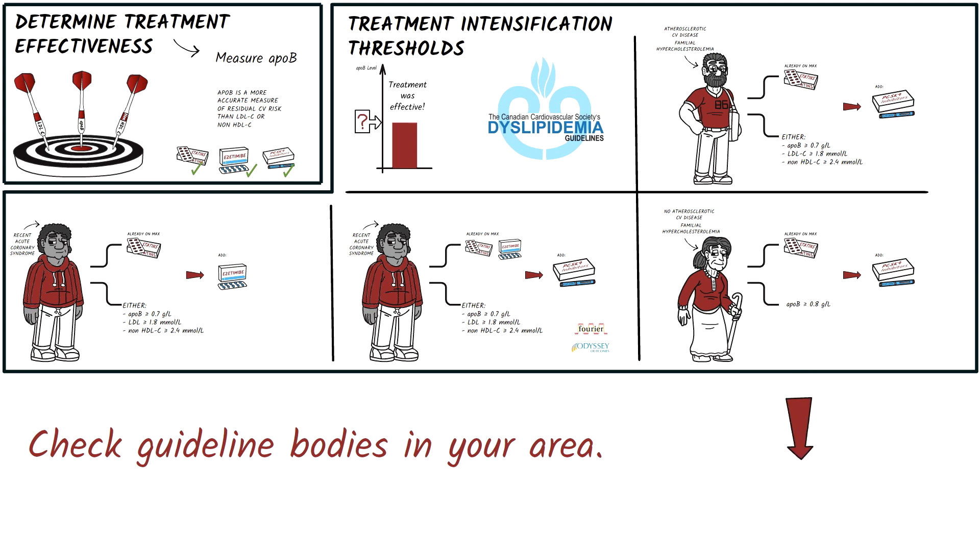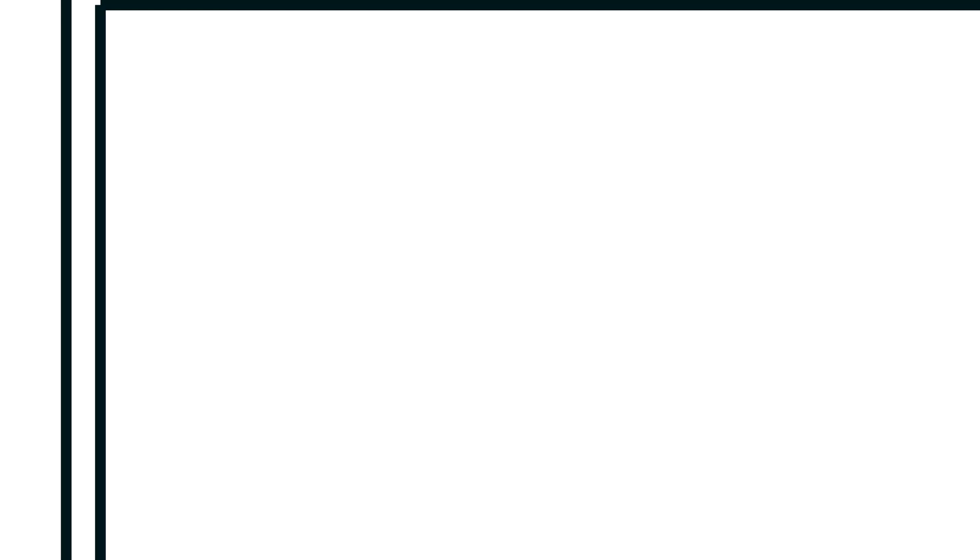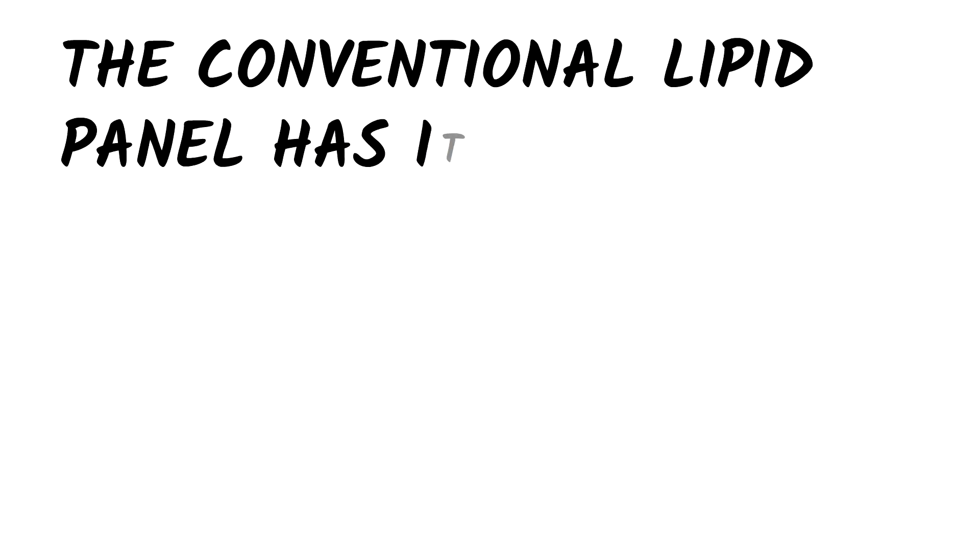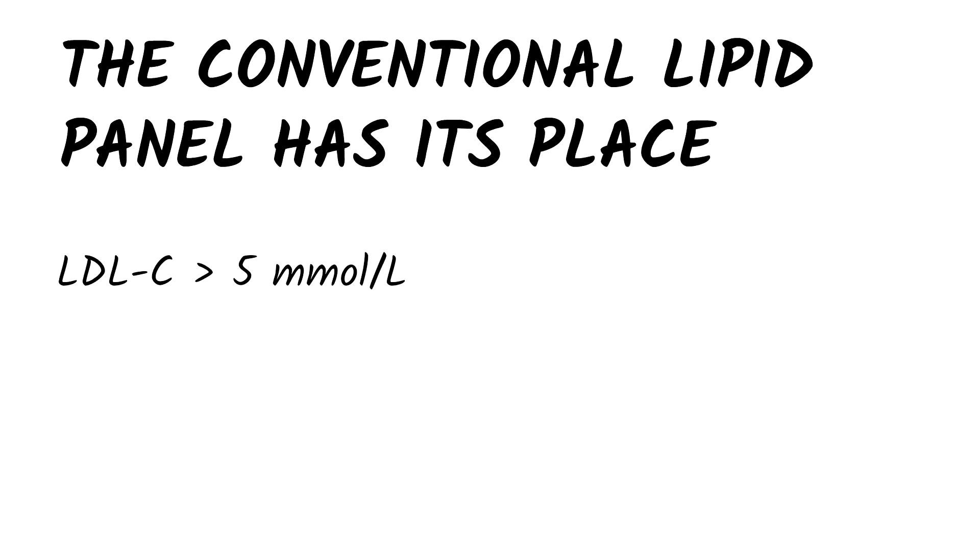The general principle is that lower is better. So should you entirely disregard conventional lipid panels? No. Why? An LDL-C level greater than 5 millimole per liter is further indication of a familial component and you should consider familial hypercholesterolemia.